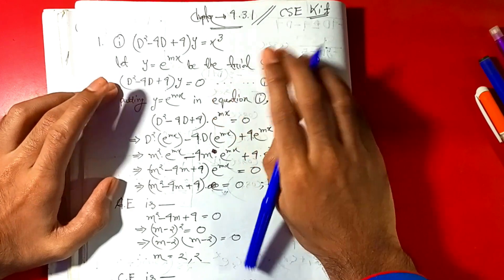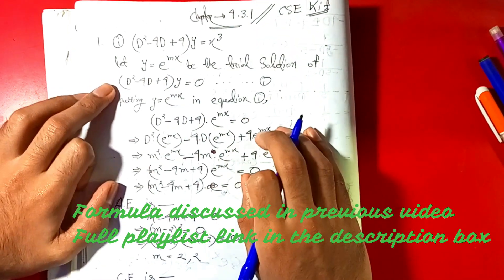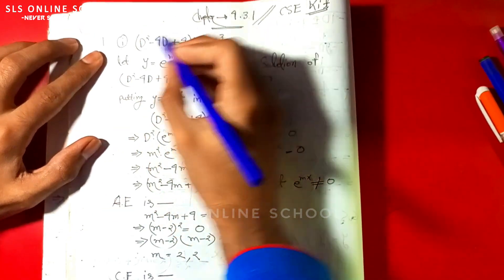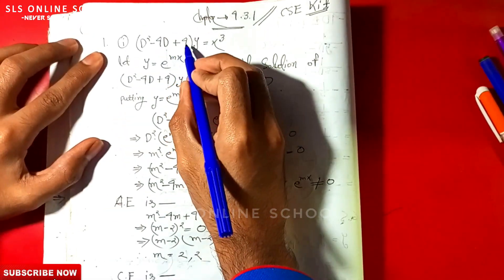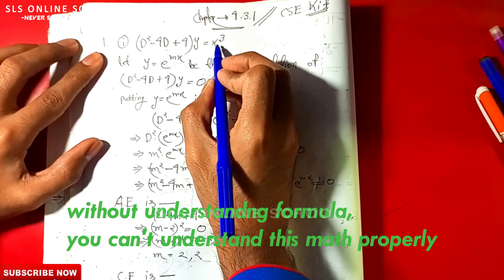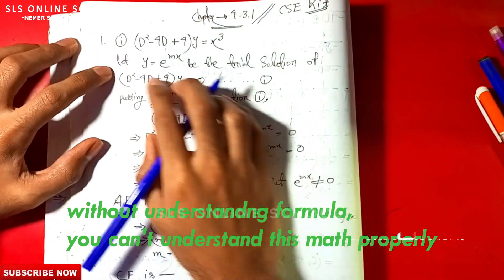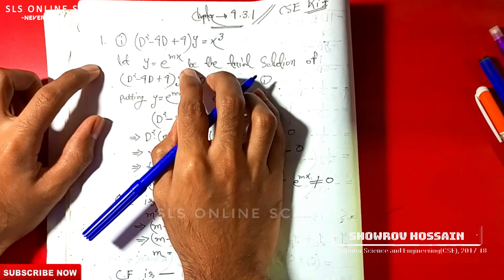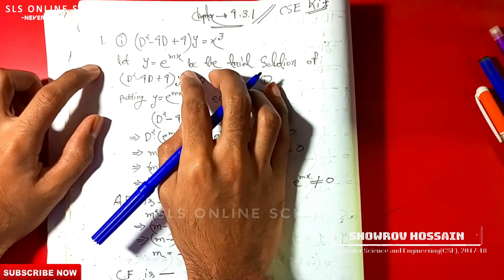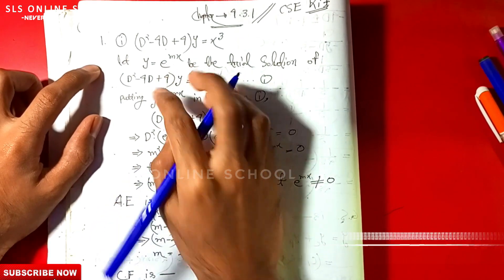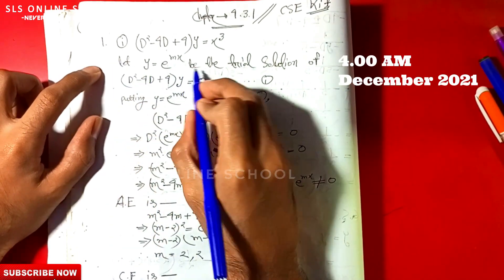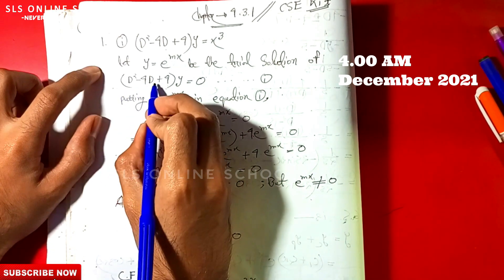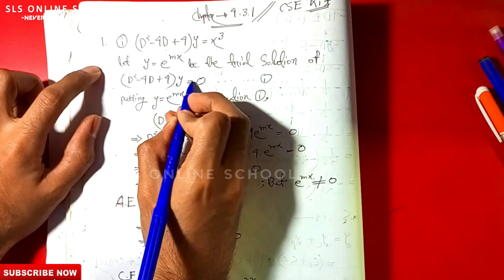Non-homogeneous equations are mathematical problems. Suppose we are given (D² - 4D + 4)y = x³. This is a non-homogeneous equation. Let y = e^(mx) be the trial solution of (D² - 4D + 4)y = 0.